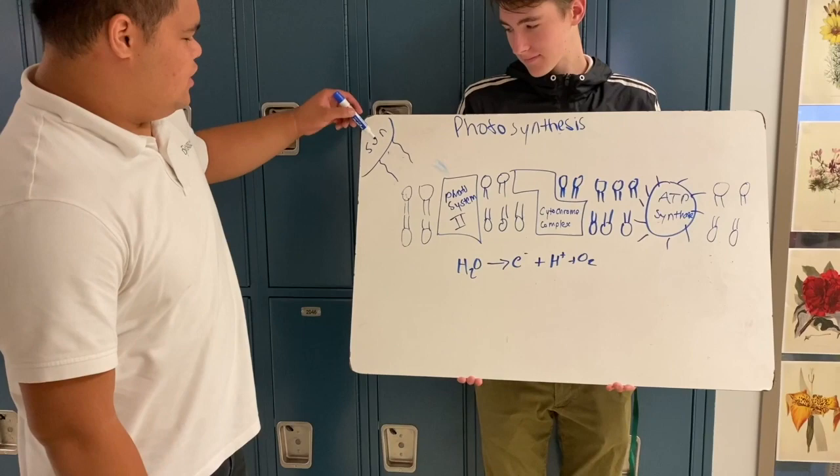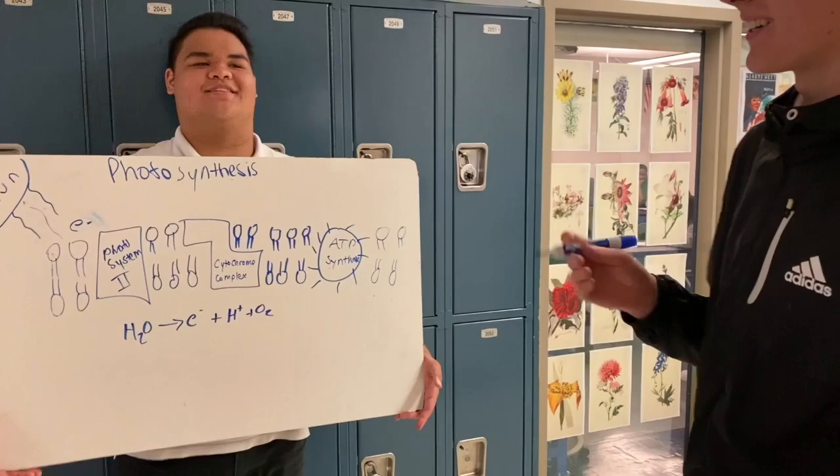So for photosynthesis, in the photo stage, first the sun supplies photosystem 2 with high energy electrons.